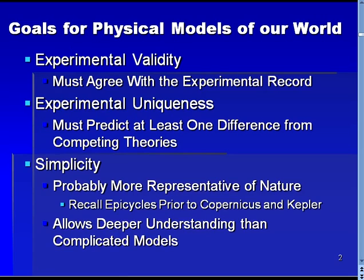A last goal is simplicity. Now, nature may not indeed be simple, but science has often advanced by recognizing underlying simplicities. The most famous example is the work of Copernicus and Kepler, who replaced a very complicated system of celestial spheres with a much simpler heliocentric system. Advances in understanding the elemental makeup of the world have also involved moving toward simpler underlying models. Simple models are readily understood without the need to be simultaneously aware of many facets all at once, allowing for a deeper understanding of nature. Hence, simplicity should be one of the goals for a physical model of our world.